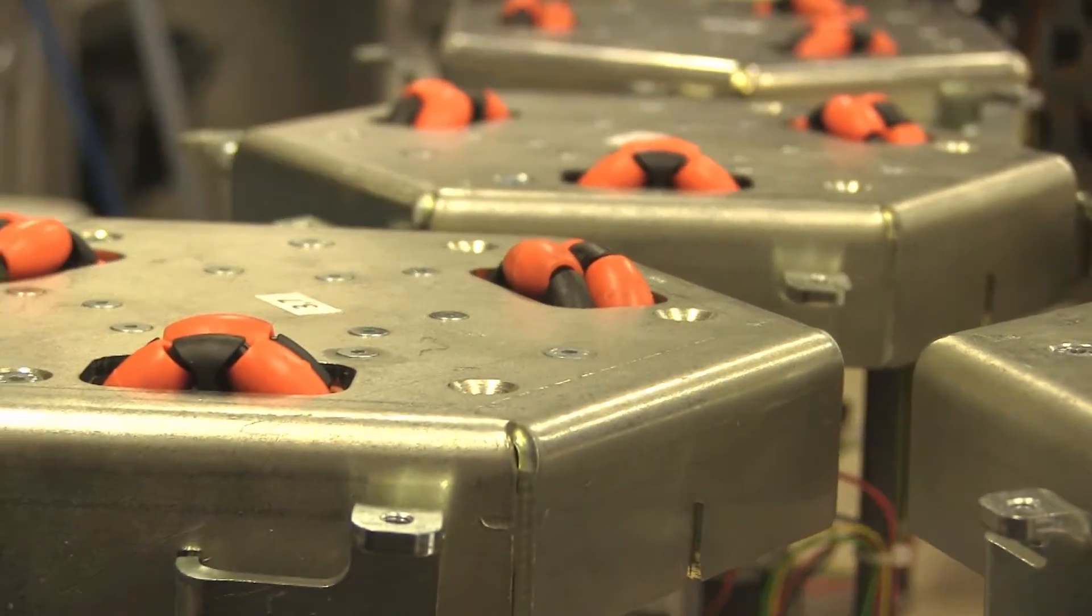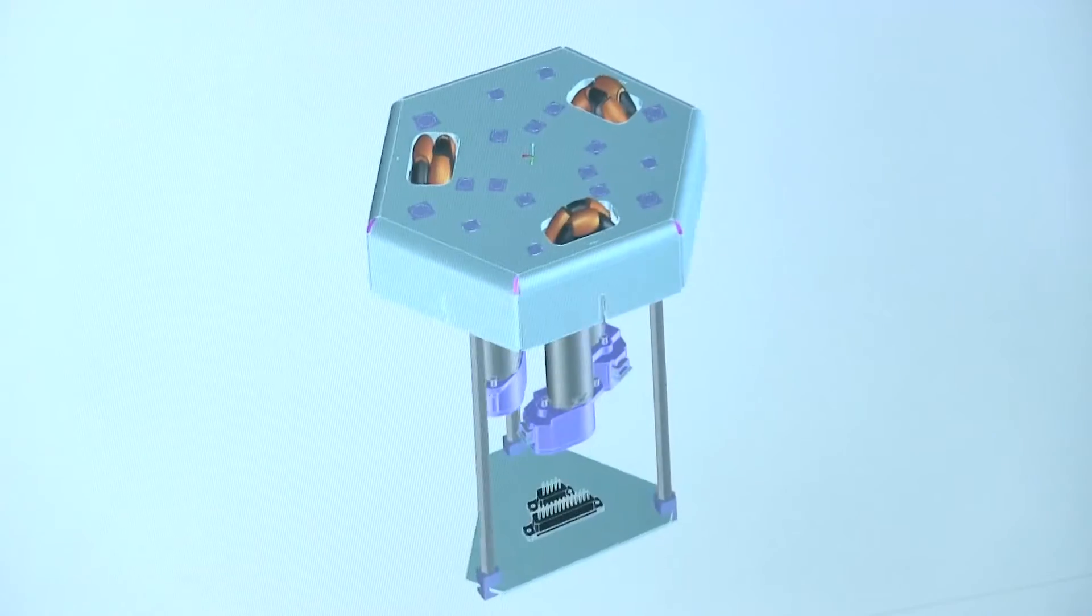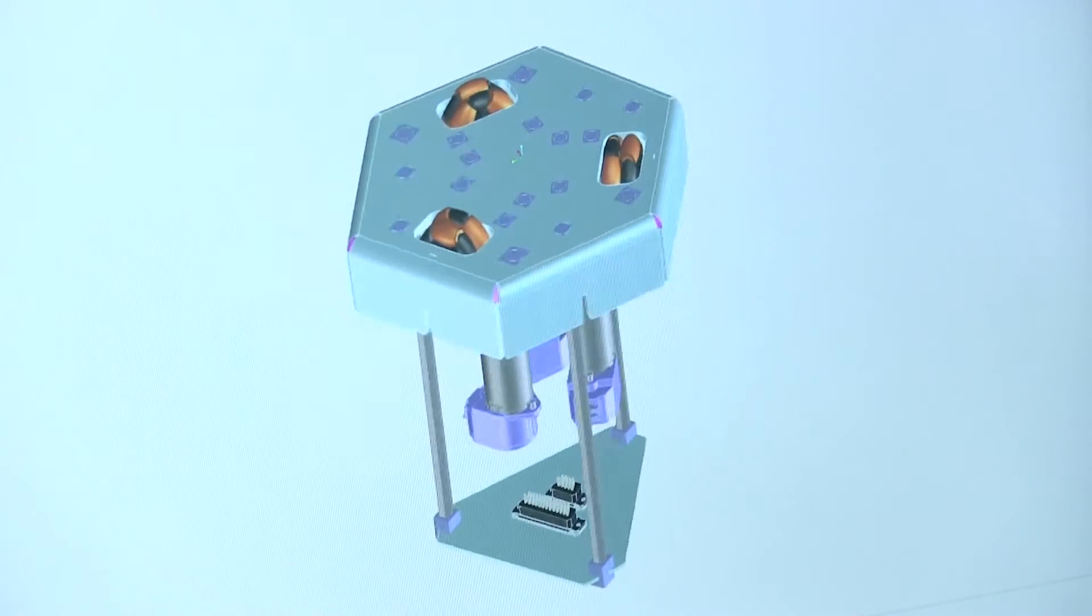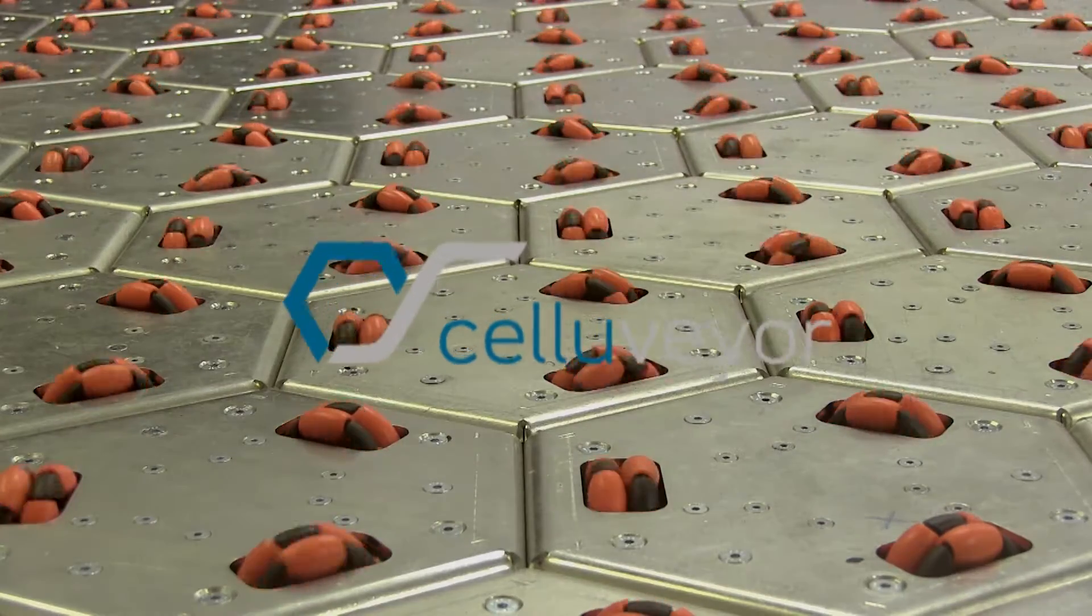The new cellular conveying and positioning system Celluvayer, that has been developed at the Institute for Production and Logistics in Bremen, is able to accommodate itself to the dynamic processes of the market as well as to economic demands.